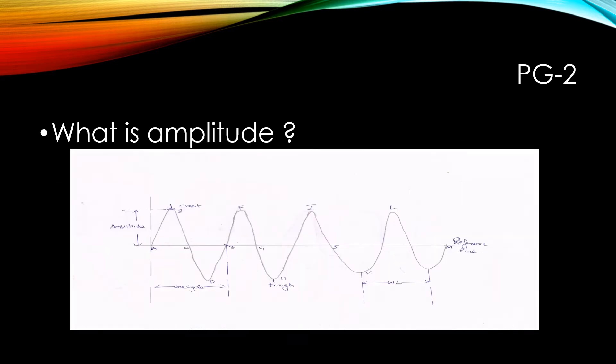Before going further, let us discuss some fundamentals of the vibrations. First one is the amplitude. What is amplitude? The height of a wave crest above the reference line is called the amplitude of the wave. And what is the reference line? It is the line of zero displacement.